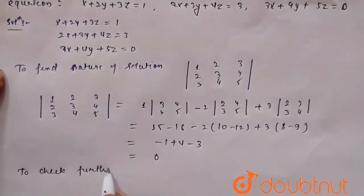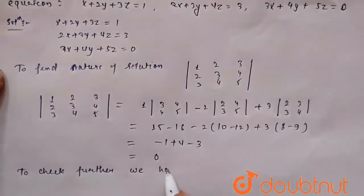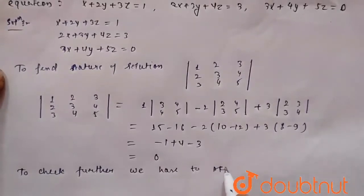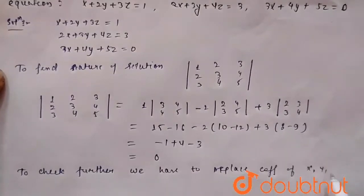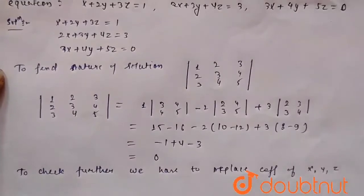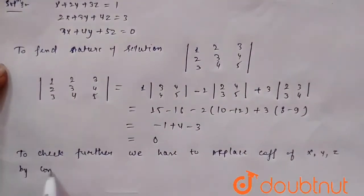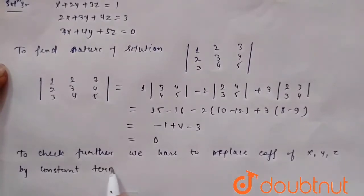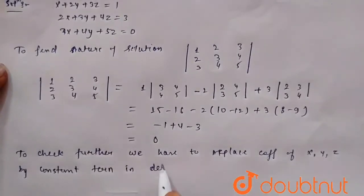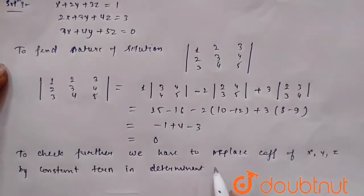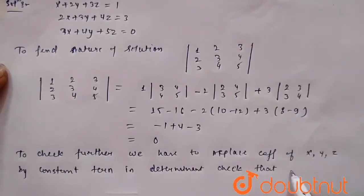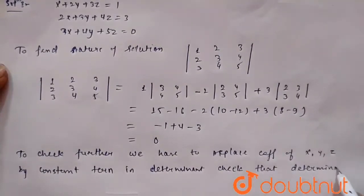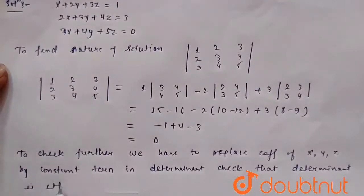So to check further, we have to replace the coefficients of x, y, and z, any of them by constant term in determinant and check that this determinant value is either 0 or not.